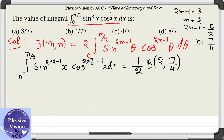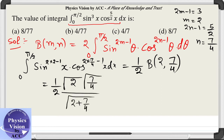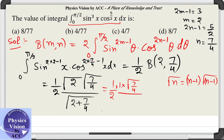Now, how will we calculate this beta function? We will make use of the gamma function, since beta is related to gamma. This gives us gamma(2) times gamma(7/4) divided by gamma(2 + 7/4), which is gamma(15/4). Using the recurrence formula gamma(n) = (n-1) gamma(n-1), we expand: gamma(2) = 1, gamma(15/4) = (11/4) gamma(11/4) = (11/4)(7/4) gamma(7/4). The gamma(7/4) terms cancel out.